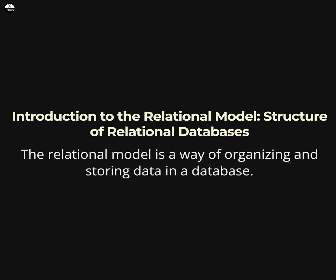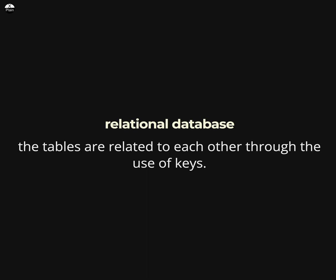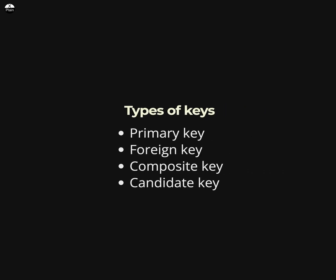In a relational database, the tables are related to each other through the use of keys. A key is a column or set of columns that uniquely identifies each row in a table. There are several types of keys, including the primary key — this is a unique identifier for each row in a table; it cannot be null and must be unique across all the rows in the table.